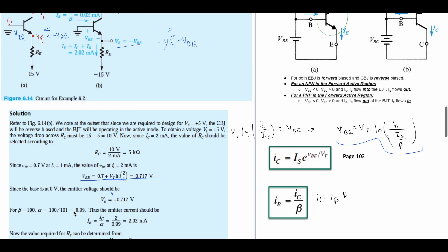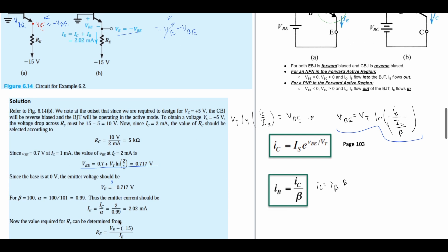So we get 0.99 here, and our IE—this is again on the same page of the notes—is equal to IC over α. That's going to give us 2.02 milliamps.